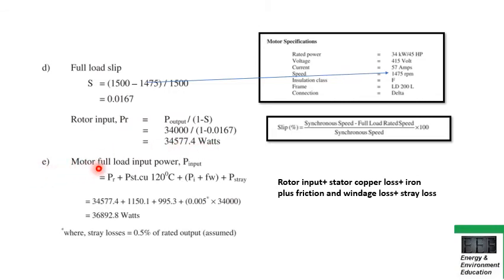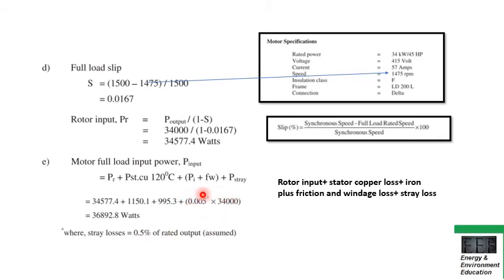For Part E — motor full load input power — you add: rotor input, plus stator copper loss, plus iron and friction and windage losses, plus stray losses. Stray losses are 0.5% of rated output (34,000 W). All the previous calculated values are summed together, giving motor full load input power equal to 36,892.8 W. All five parts are interlinked — each earlier result feeds into the next calculation.